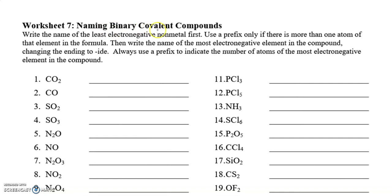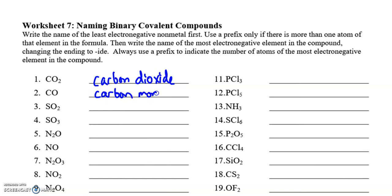Just to review: covalent compounds — binary covalent compounds — are going to contain two non-metals, like carbon and oxygen. This is not for ionic compounds. When you're naming a covalent compound, all you have to do is write the name of the first element, then write the name of the second element. If it has a subscript, then you use a prefix. The second element always gets a prefix regardless. No charges, because these are covalent compounds, not ionic compounds.